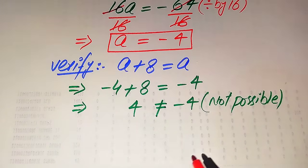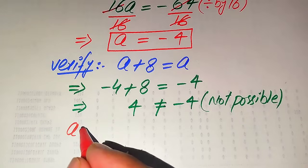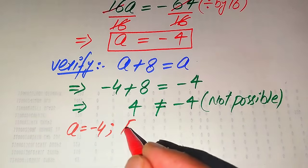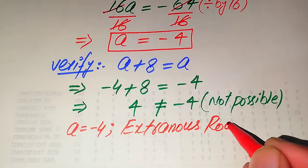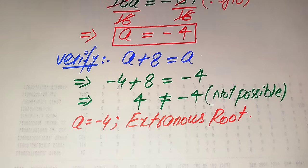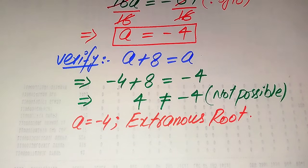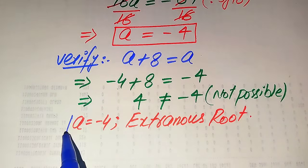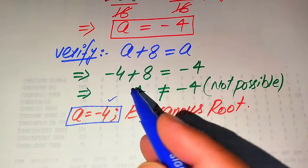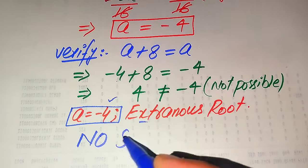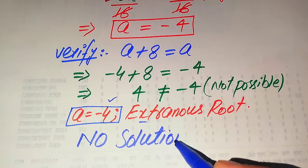We conclude that a = −4 is the extraneous root of the given equation. The roots that do not satisfy the given equation are called extraneous roots, and the roots that do satisfy it are called solutions. Since a = −4 is not satisfied, this is an extraneous root, and the solution set of this problem has no solution.